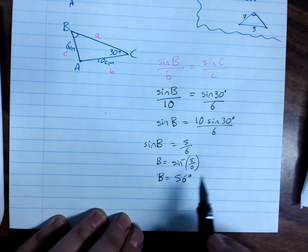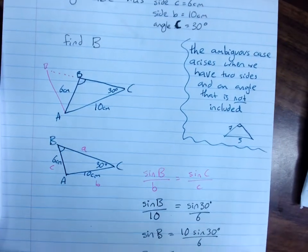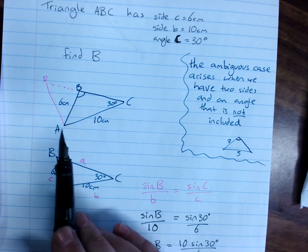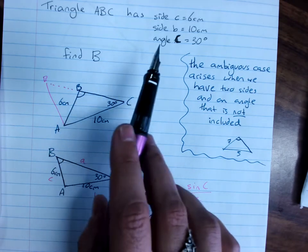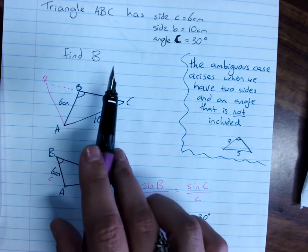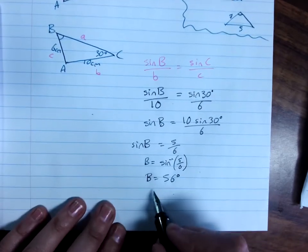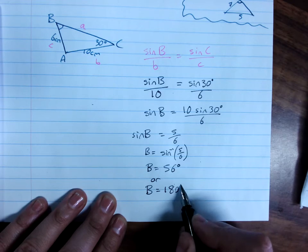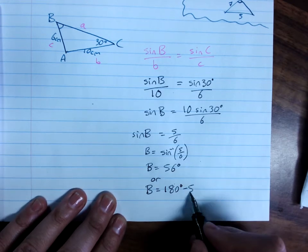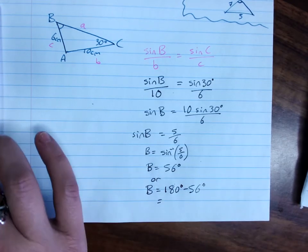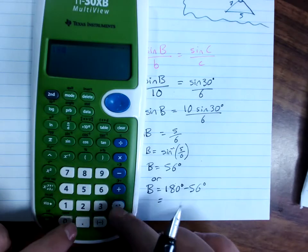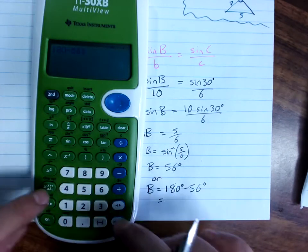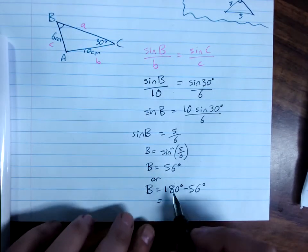But, I know it's the ambiguous case and I have no guidance as to whether B is obtuse or acute. So, B equals 180 minus 56 degrees, which is 124 degrees.